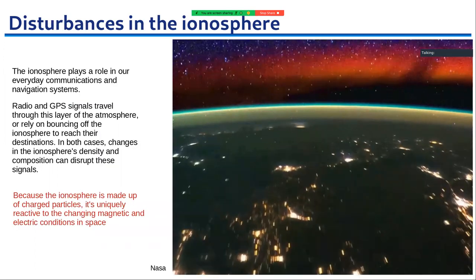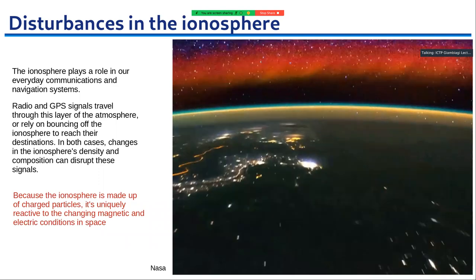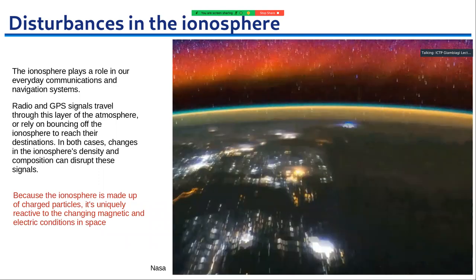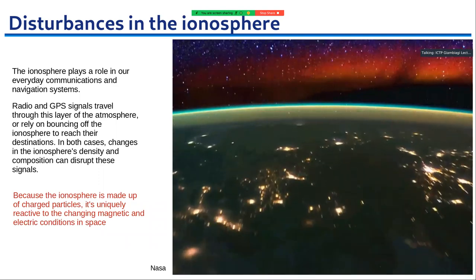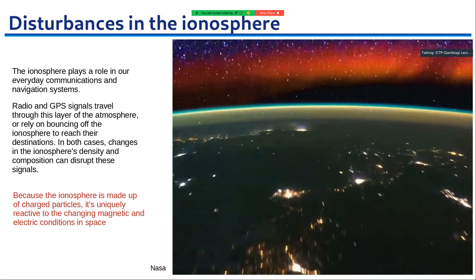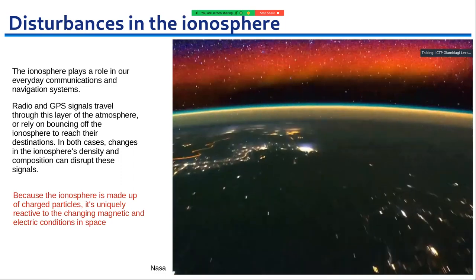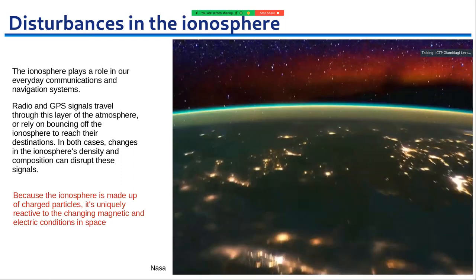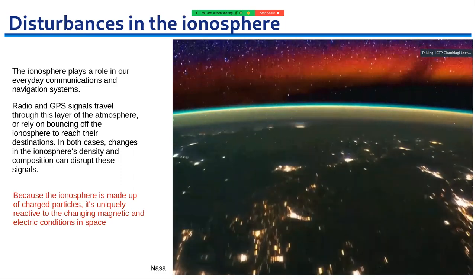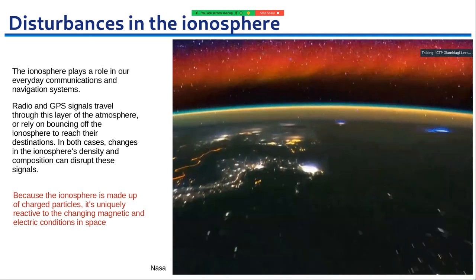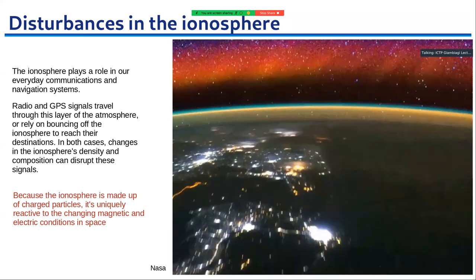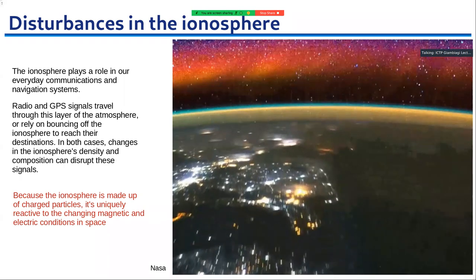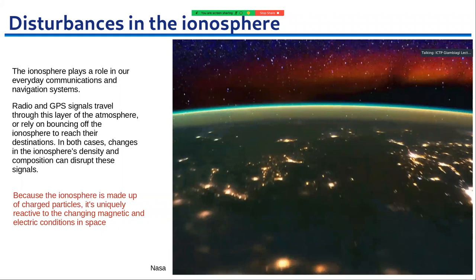The ionosphere plays a very important role in our communications and GPS signals. Because it is made of charged particles, it is very sensitive to any kind of changes in the magnetic or electric conditions in space.